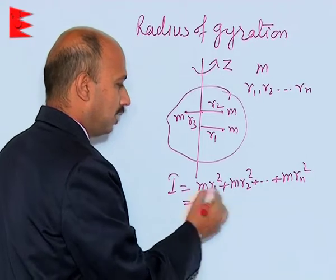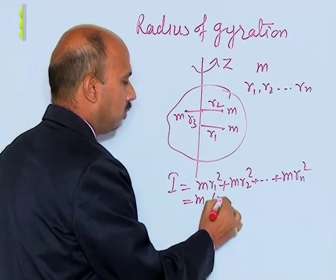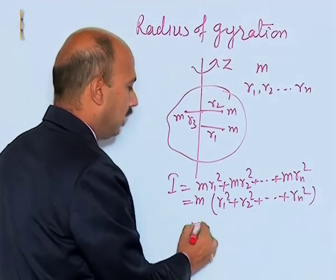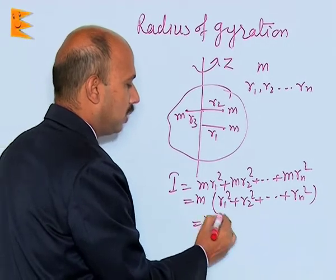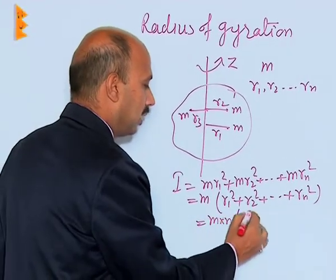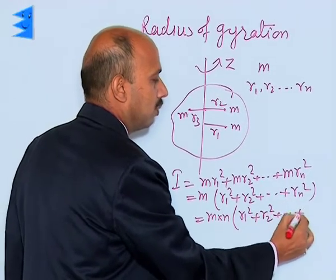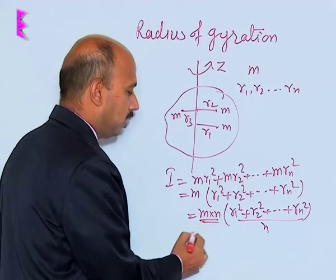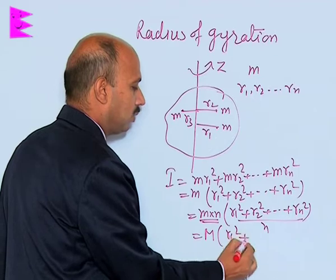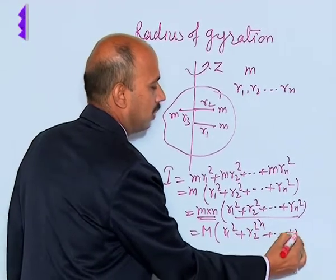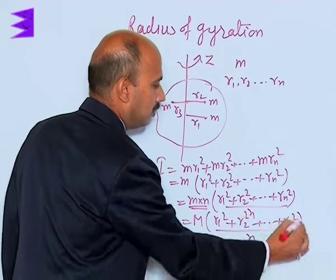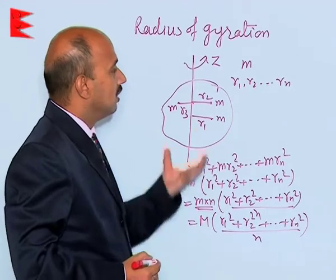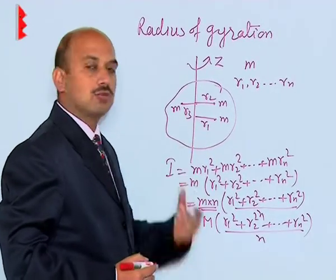We can write this as m into (r1² + r2² + ... + rn²). Since there are n number of particles, we can write m·n into [(r1² + r2² + ... + rn²) / n]. So this is the total moment of inertia of the body due to the distribution of masses around the axis of rotation.